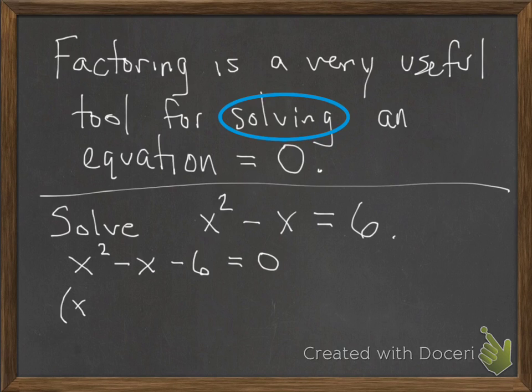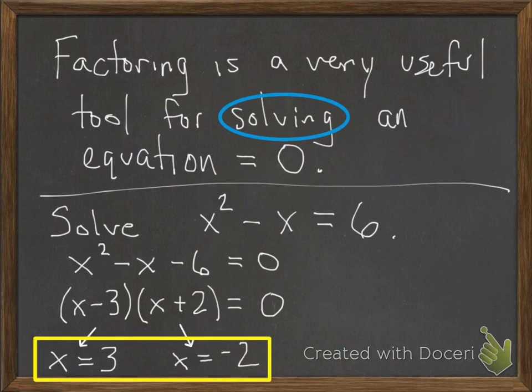Now you factor it. And the nice thing about this, when you have something factored equal to 0, you just have to look when each of the factors individually is equal to 0. So the first one is equal to 0 when x is 3, and the second one is equal to 0 when x is negative 2.